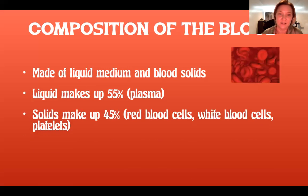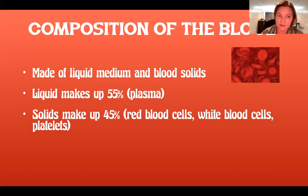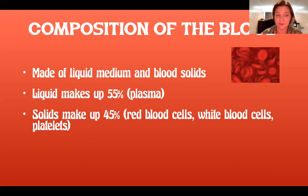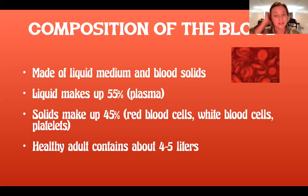Let's look at the composition of blood. It is made of a liquid medium and blood solids. The liquid is about 55% of the blood and is called plasma, and the solids make up 45% — that is red blood cells, white blood cells, and platelets. A healthy adult contains about four to five liters of blood.